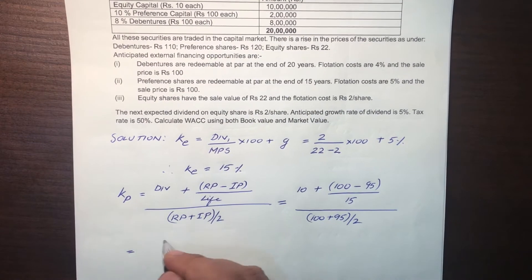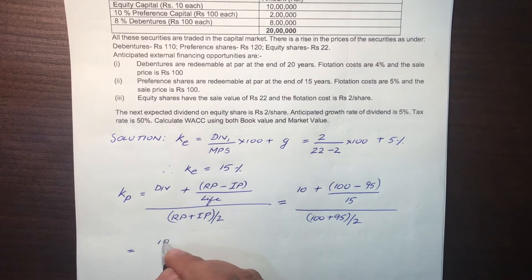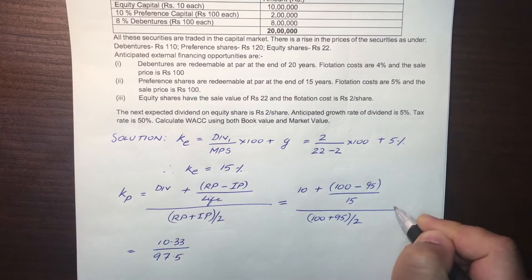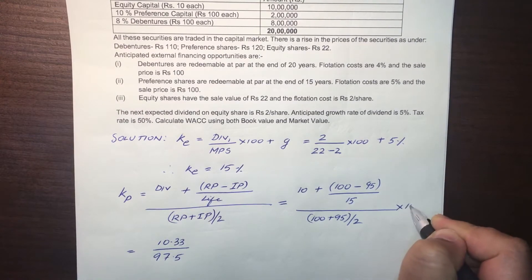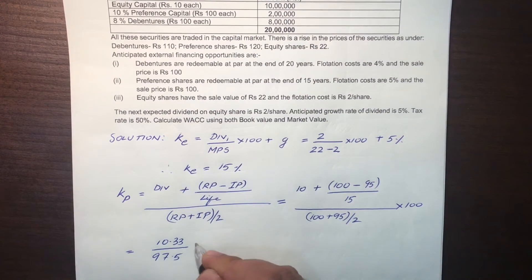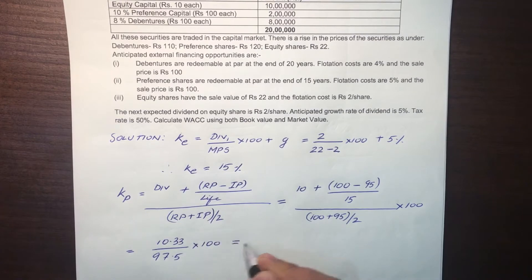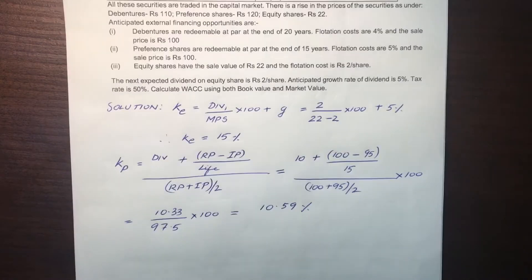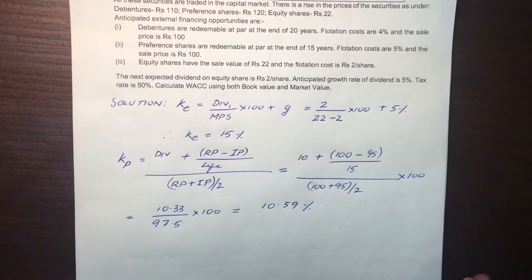So finally: KP = 10.33 / 97.5 × 100 = 10.59%. We have found out KP.